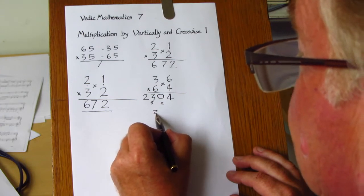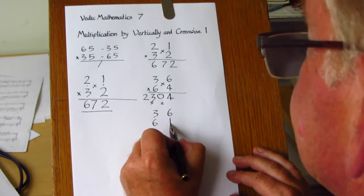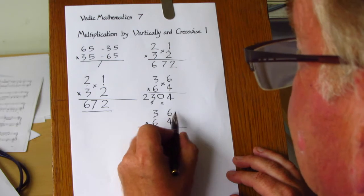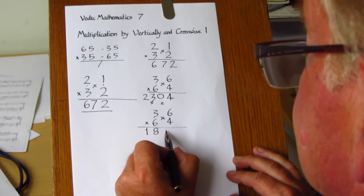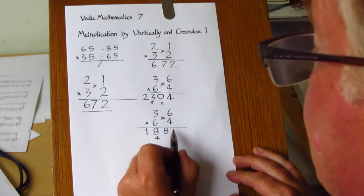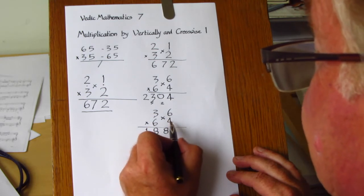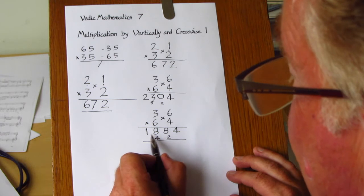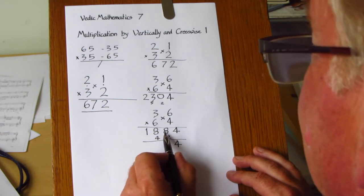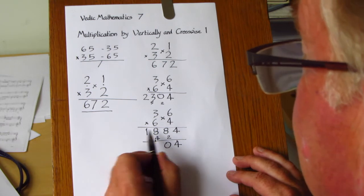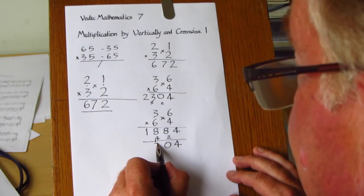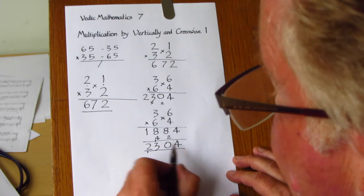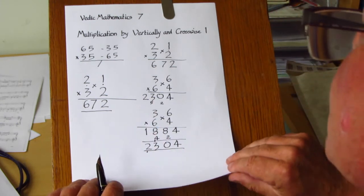But doing this from the left, we would find this. We would start with 3 6s are 18. And then we have 36 add 12 is 48, which is 8 with 4 to carry. And then 6 4s are 24. And you can see here that we would need a second line to move these carry digits into the right place. So we have 4, 8 add 2 is 10, 8 add 5 is 13, and 1 add 1 is 2. You end up with the same answer, but it may require an extra line of working.